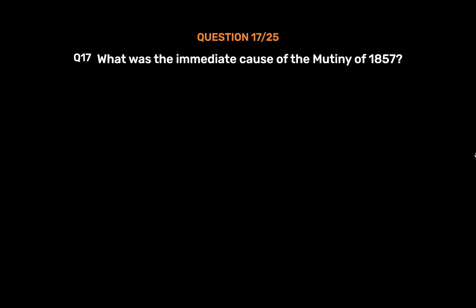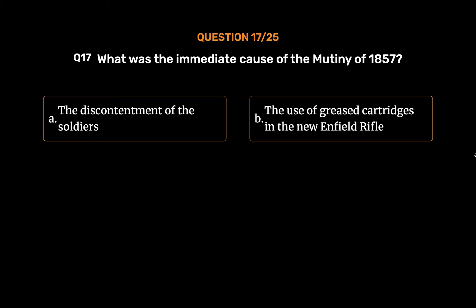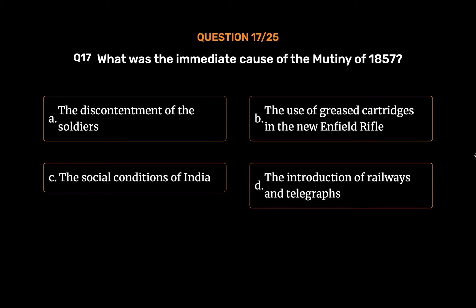Question No. 17. What was the immediate cause of the mutiny of 1857? Option A: The discontentment of the soldiers. Option B: The use of greased cartridges in the new Enfield rifle. Option C: The social conditions of India. Option D: The introduction of railways and telegraphs.